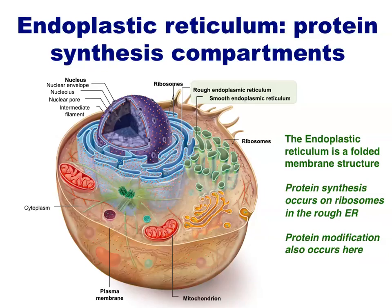Surrounding the nucleus is a folded membrane structure known as the endoplasmic reticulum — a network of membrane sacs in which protein synthesis or modification takes place. The endoplasmic reticulum, usually abbreviated ER, can be divided into two categories: the rough ER and the smooth ER, named for their appearance. The rough ER has a grainy appearance because its membranes are studded with ribosomes, which synthesize proteins directly into the space inside the ER. These proteins then move from the rough to the smooth ER and eventually travel through the cell in small membrane-bound compartments known as vesicles.